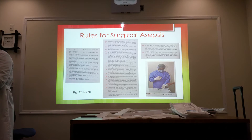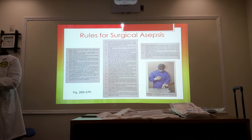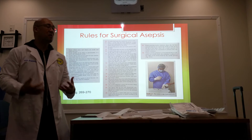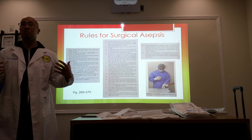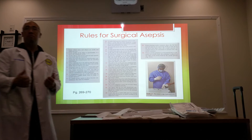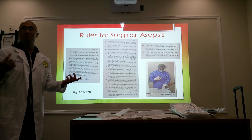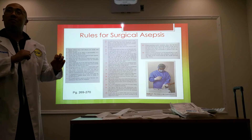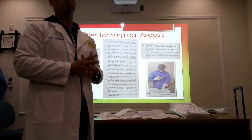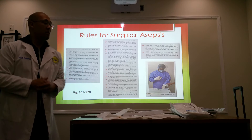Number three: sterile objects and persons must be kept separate from those that are non-sterile. When any item that must be sterile becomes contaminated, the contamination must be remedied immediately. For example, if you're a circulator and you accidentally brush against a sterile field, your ethical responsibility is to announce it — let the team know you've contaminated the field.